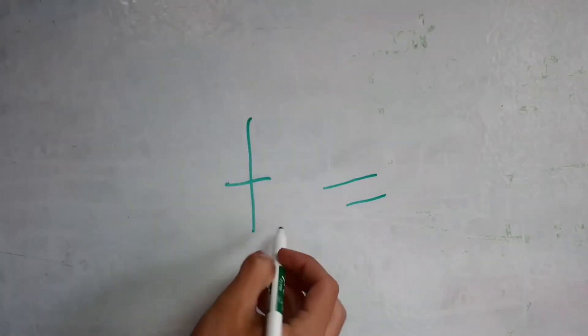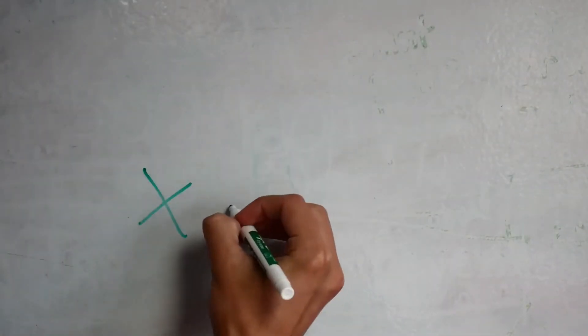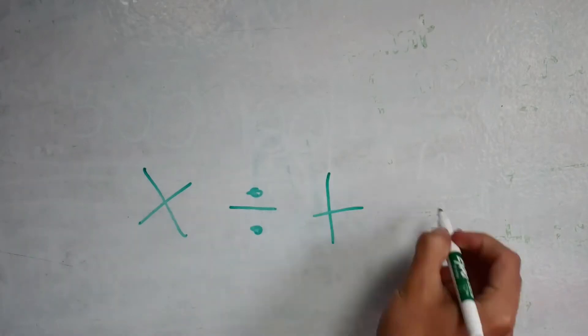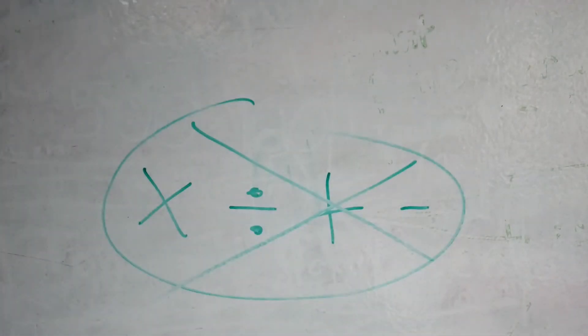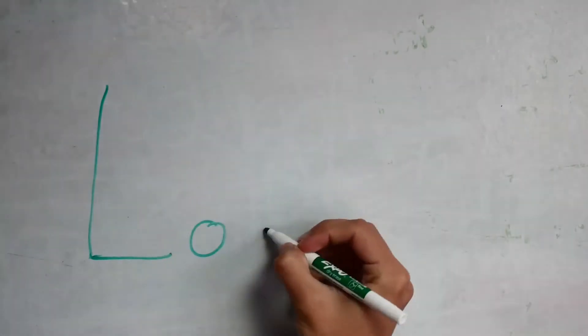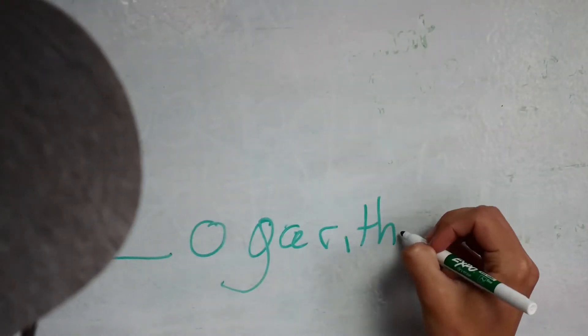We need to isolate it on one side of the equation, and we can't do it with multiplication, addition, division, or subtraction. But we can do it with logarithms. Here's how.